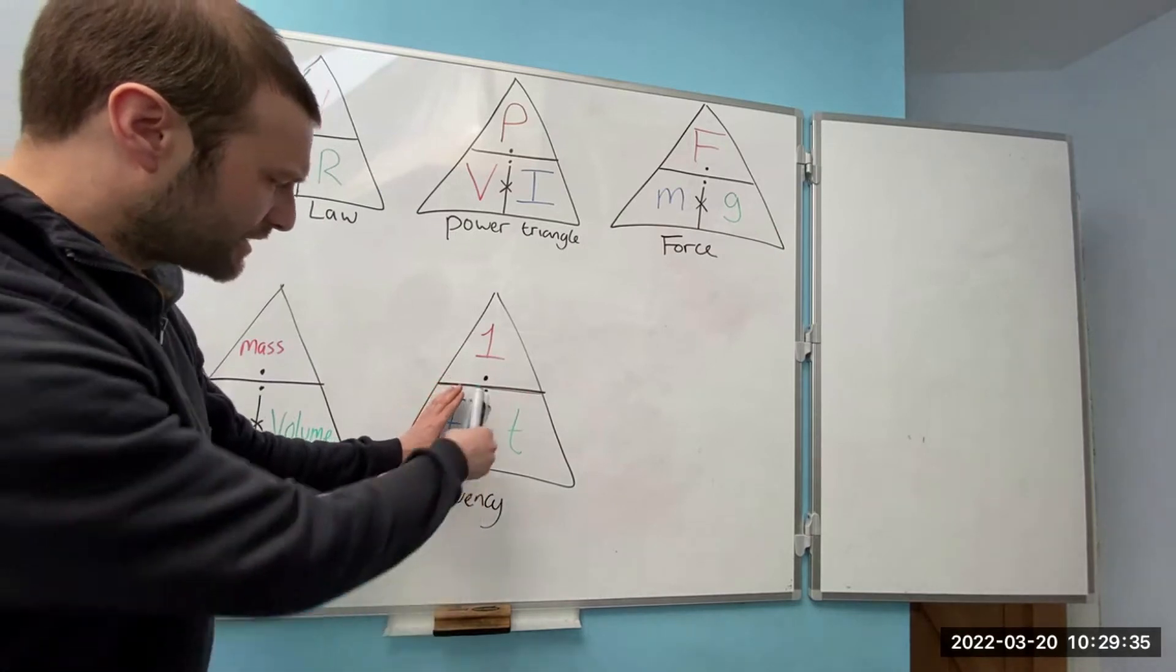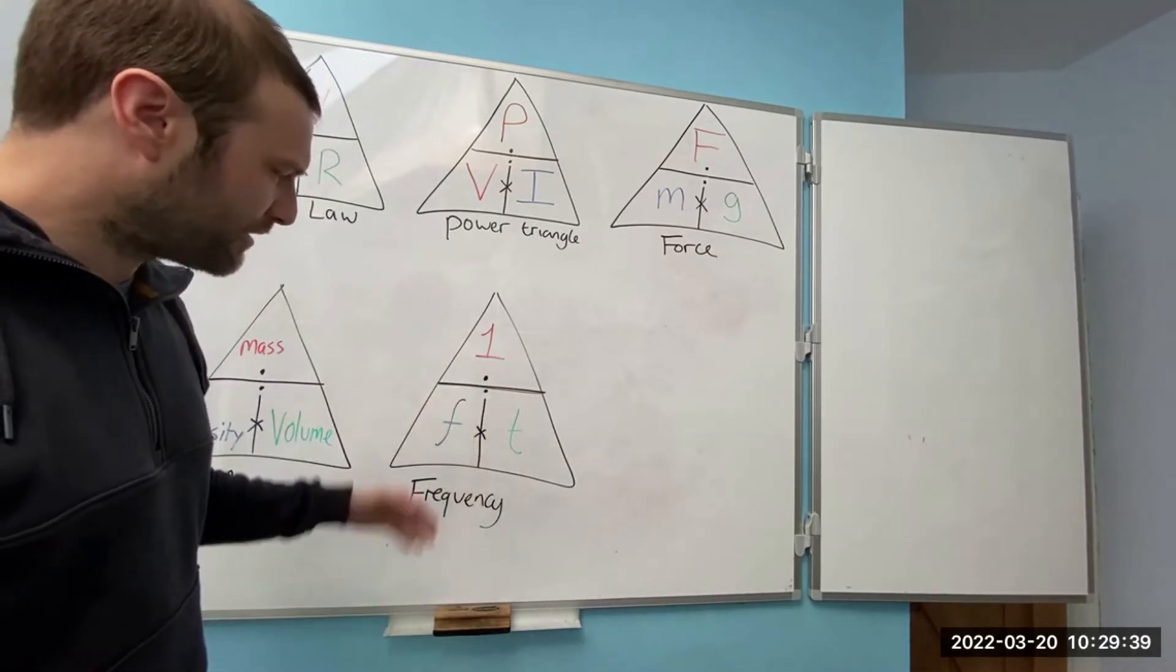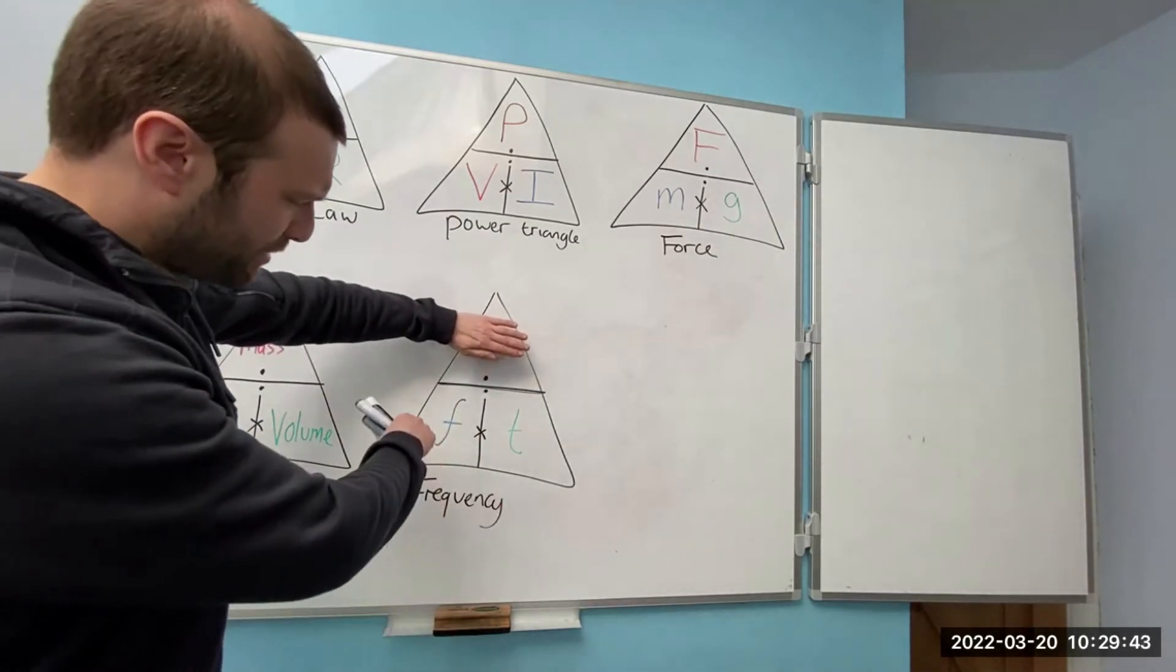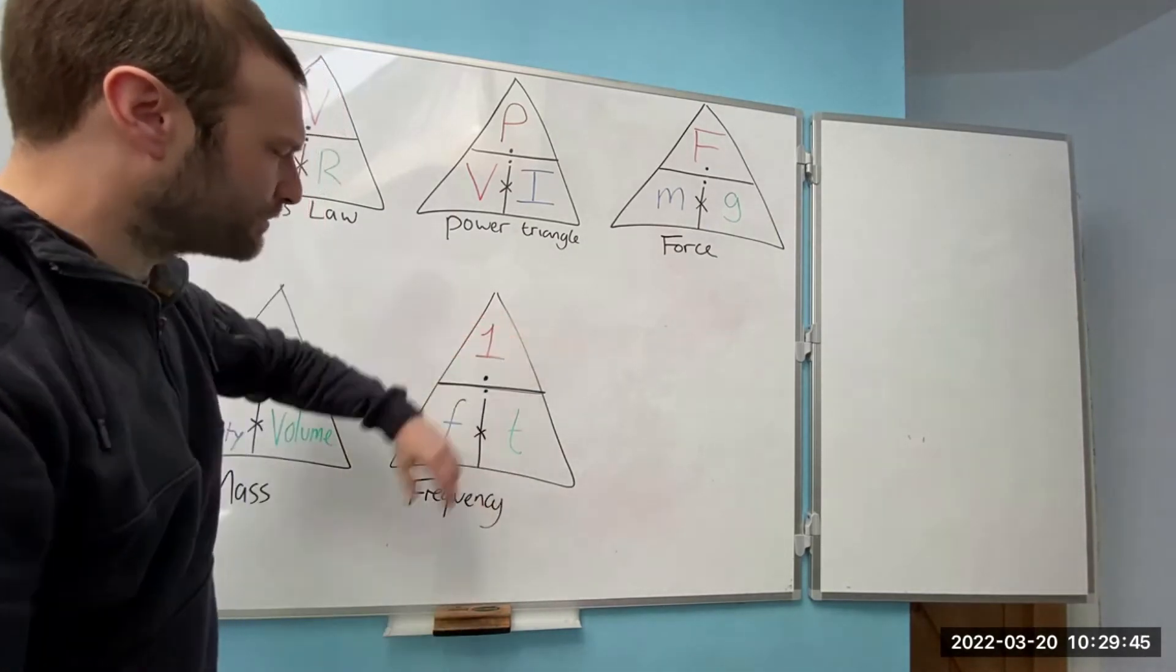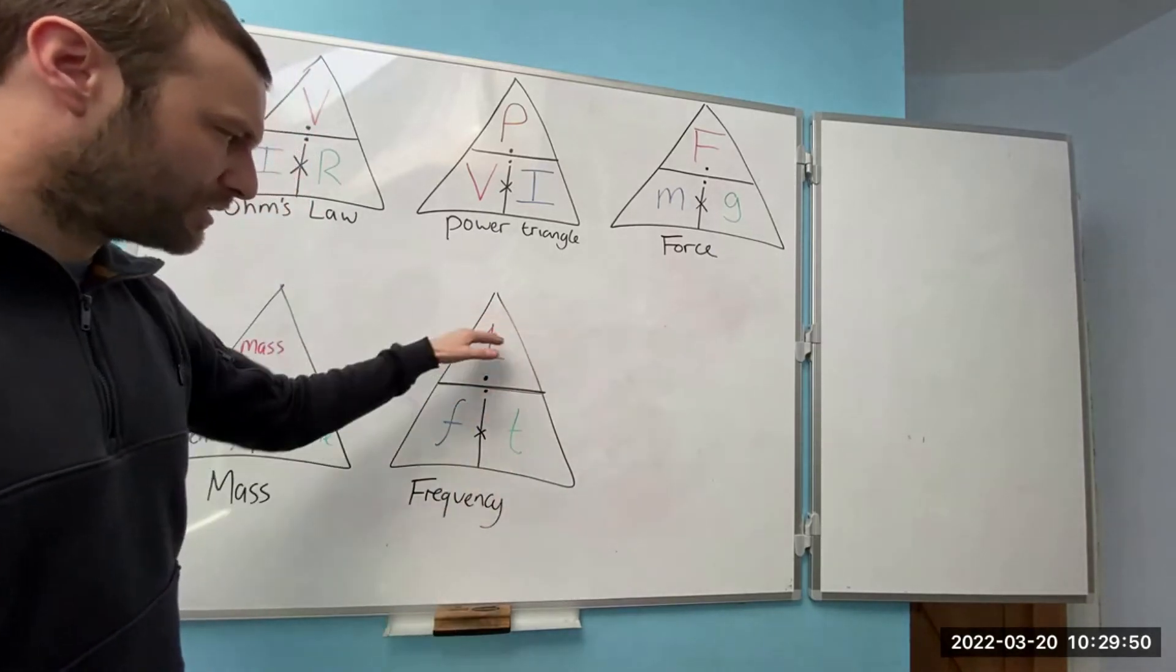And if I wanted to find the frequency, that would be one divided by time. If I wanted to find what the time was, that would be frequency times time. So if I wanted to find what was at the top, that would be frequency times time.